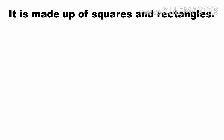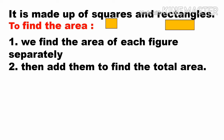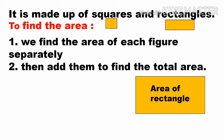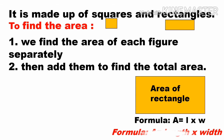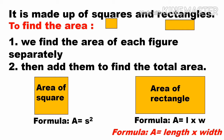The given irregular shape is made up of squares and rectangles. To find the area, we find the area of each figure separately, then add them to find the total area. The formula for the area of a rectangle is A equals length times width, and the formula for the area of a square is A equals side squared.